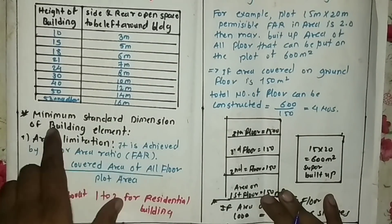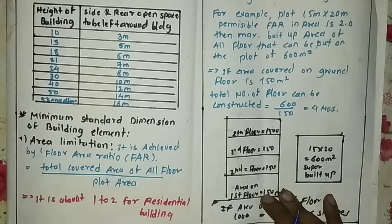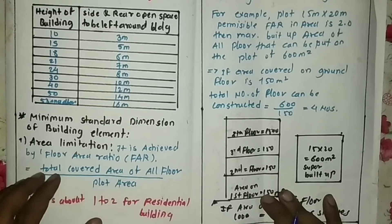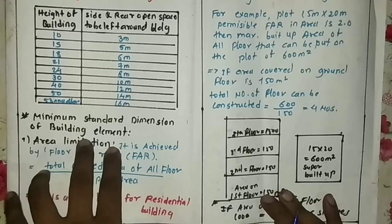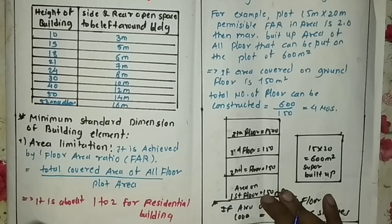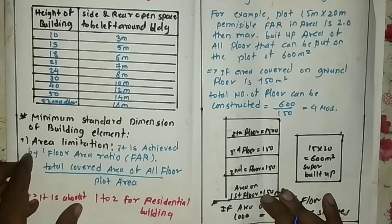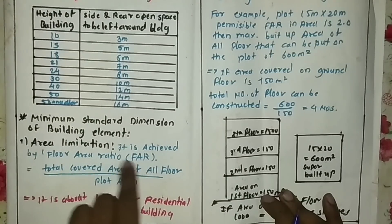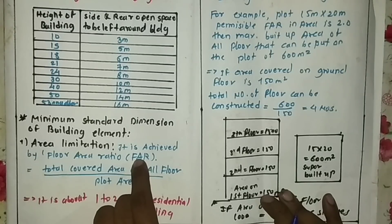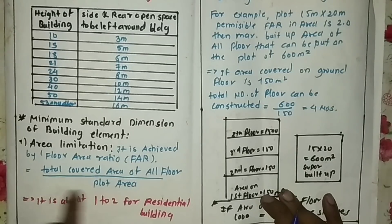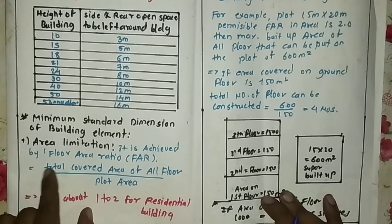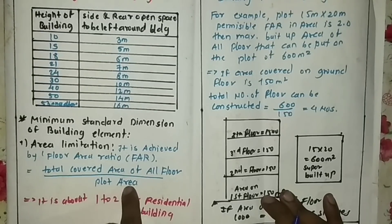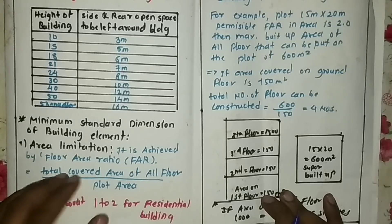Now we come to minimum standard dimensions of building elements. We will look at area limitation — what is the construction area you can use and what is the number of stories you can construct on your plot. This area limitation is achieved by the Floor Area Ratio, or FAR. FAR equals the total covered area of all floors divided by the plot area.